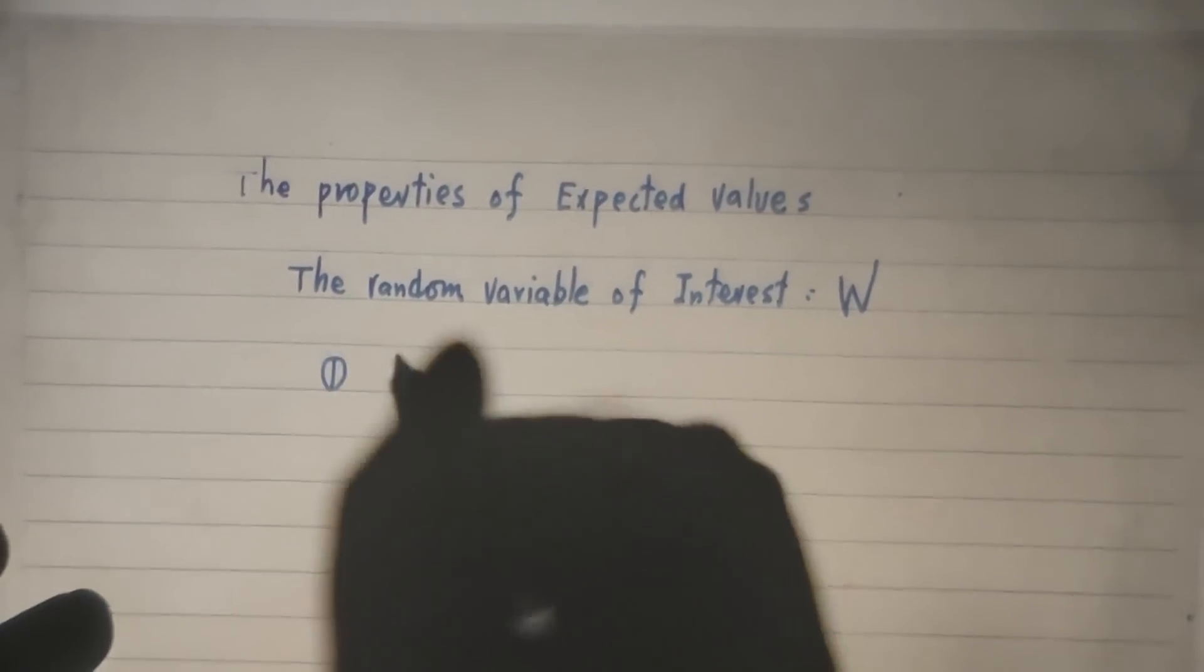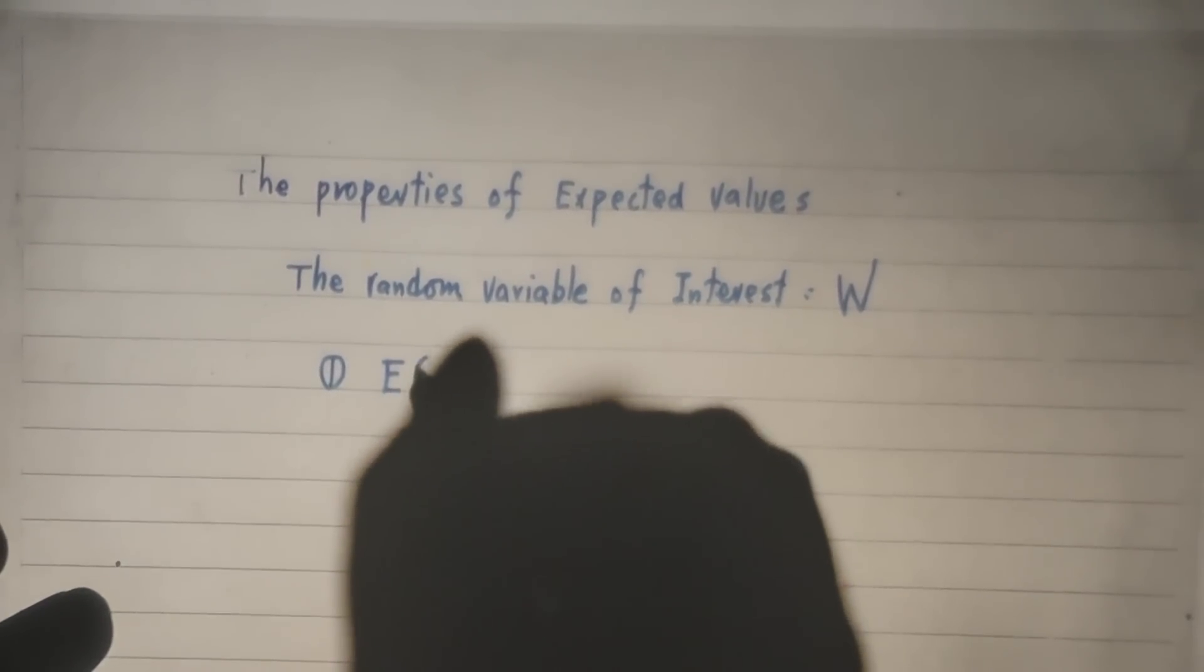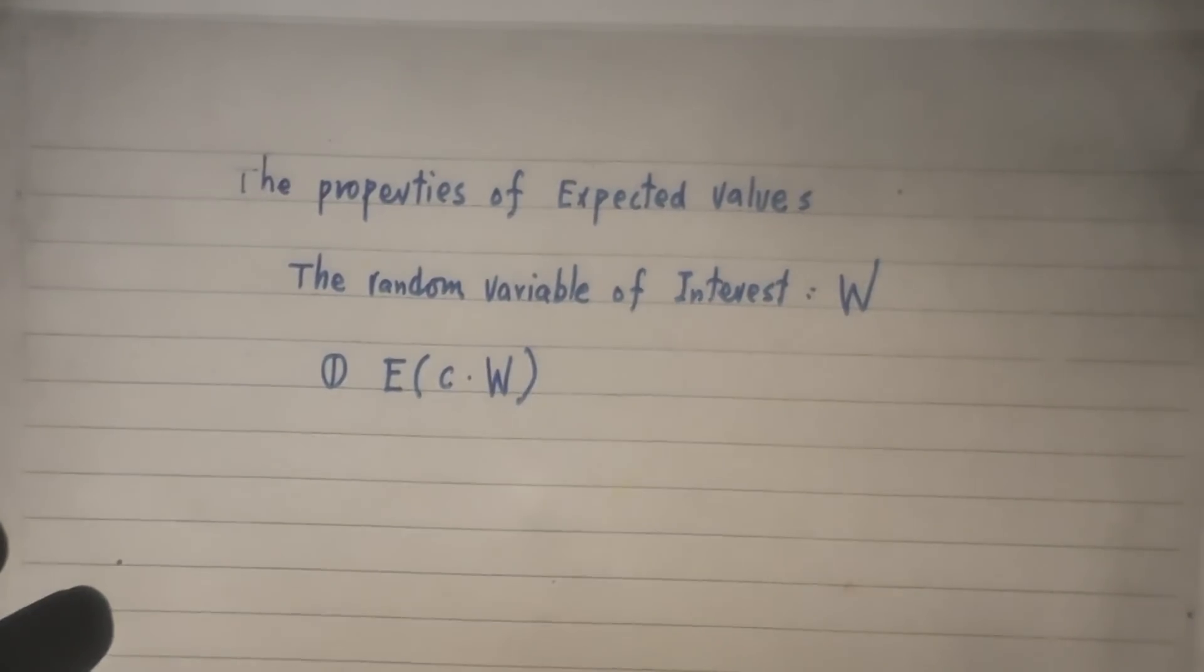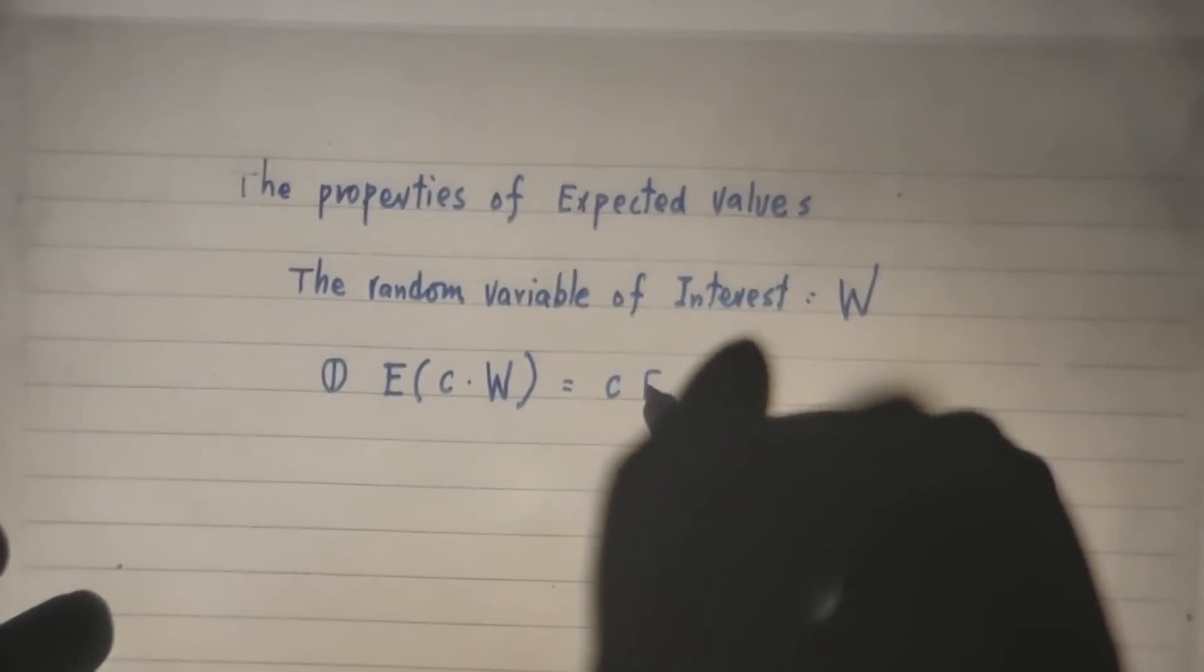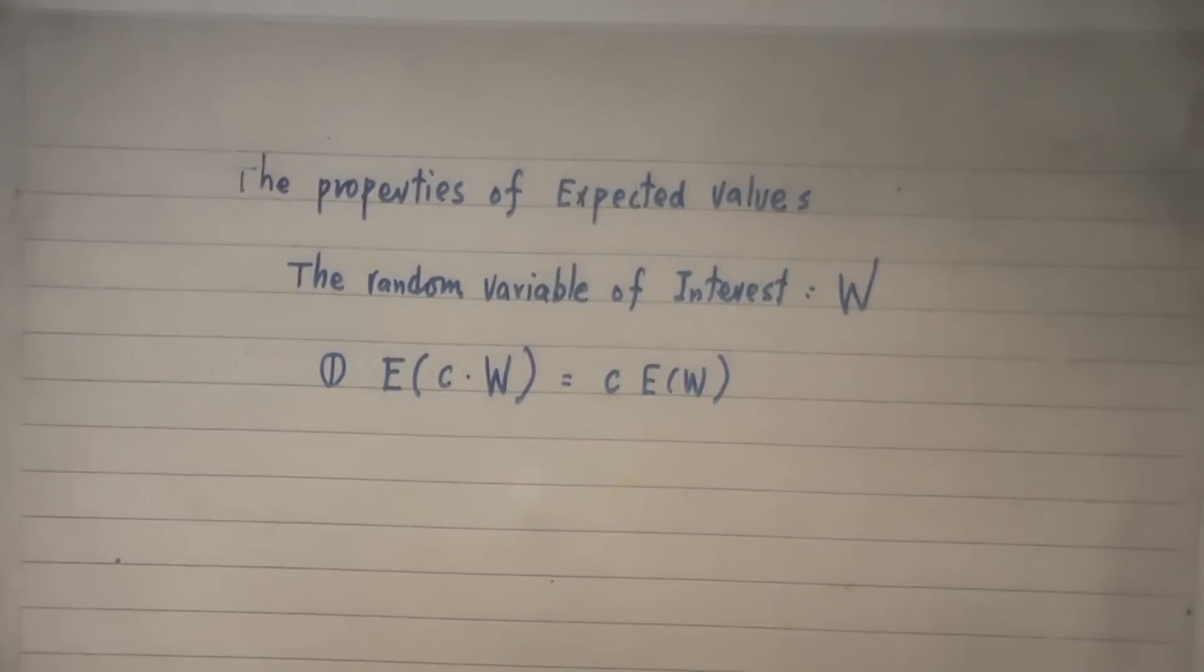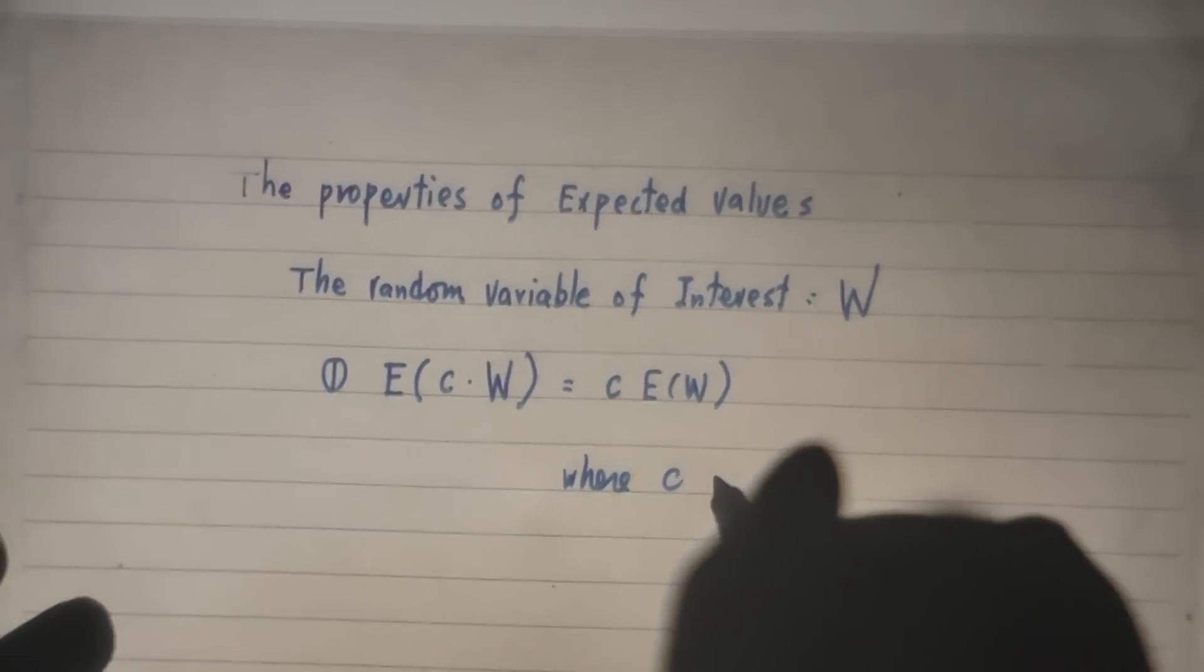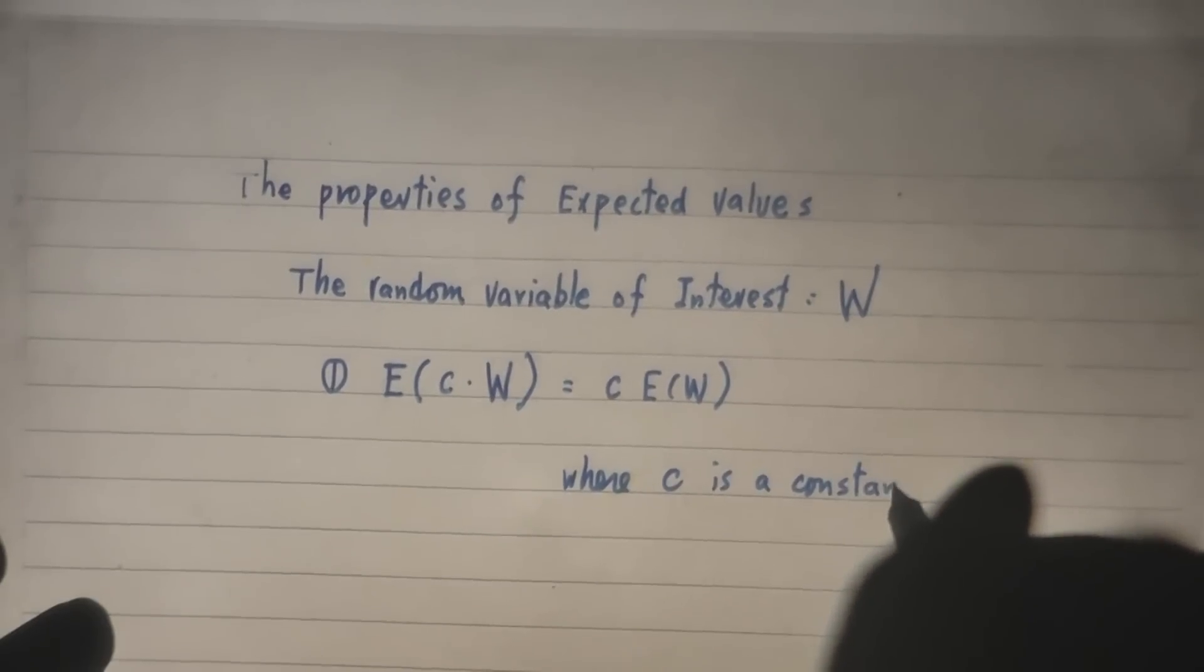Property one, expected value of C times W is C times expected value of W. That's property one. Where C is a constant and W is a random variable.